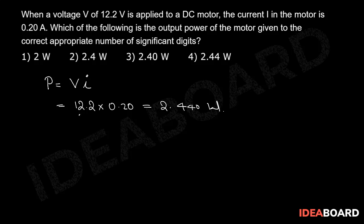So the first number, voltage, contains three significant figures, and the second number, current, contains two significant figures. So the final solution is supposed to contain two significant figures.